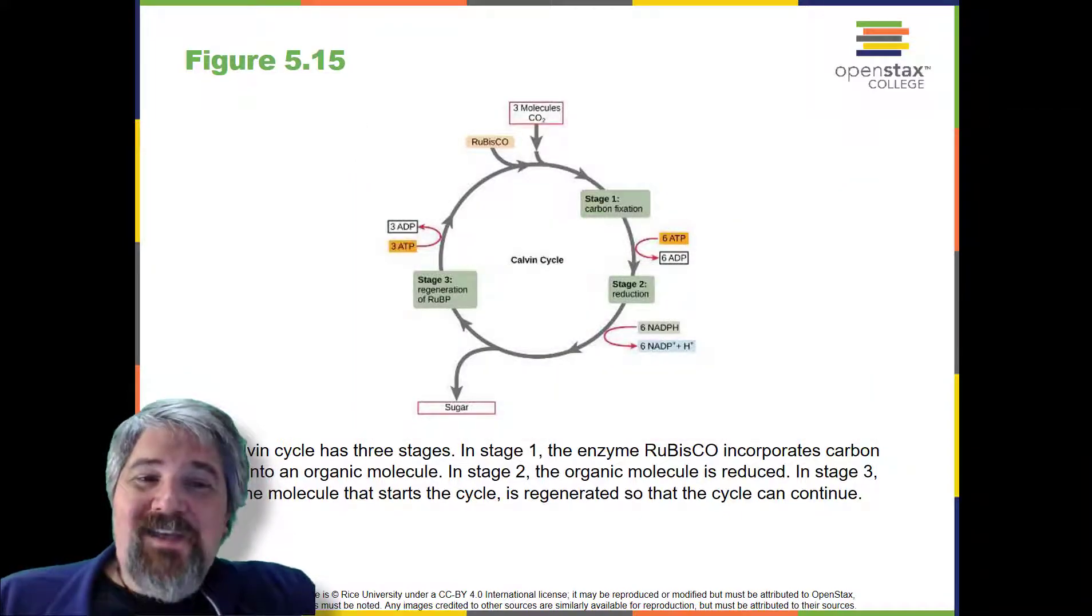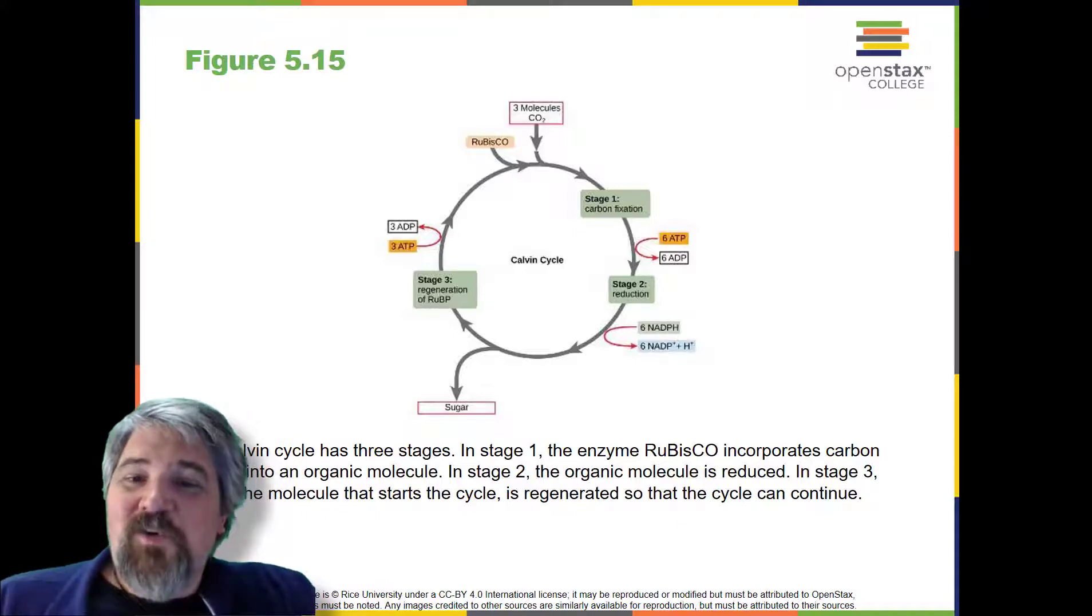The molecules of ADP and NAD+ resulting from the reduction reaction return to the light-dependent reactions to be re-energized. One of the G3P molecules leaves the Calvin cycle to contribute to the formation of the carbohydrate molecule, which is commonly glucose.